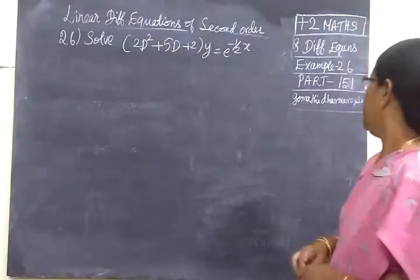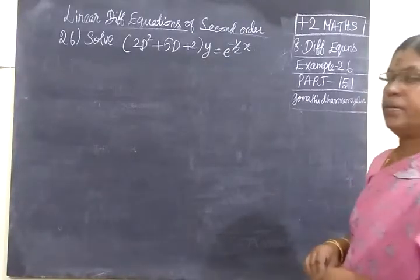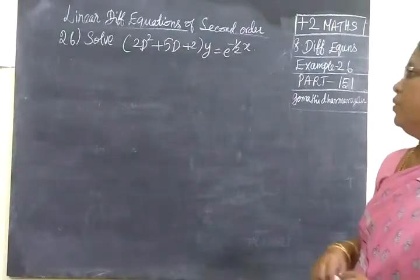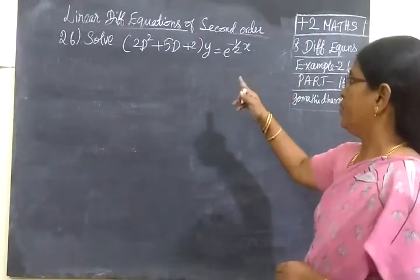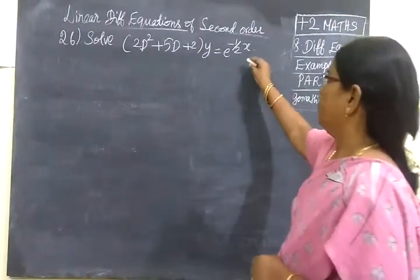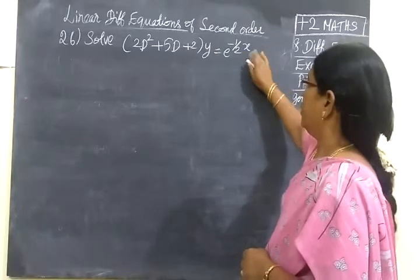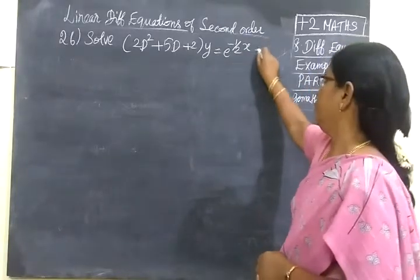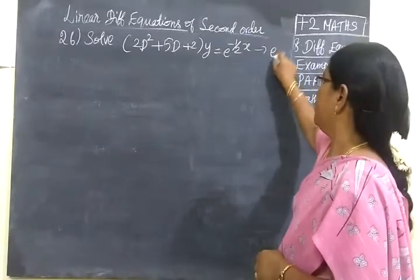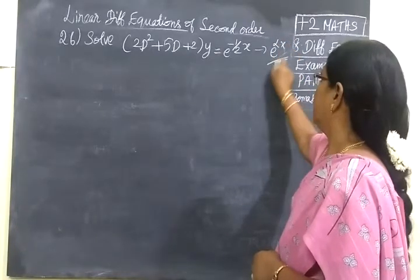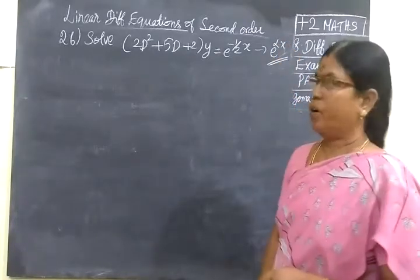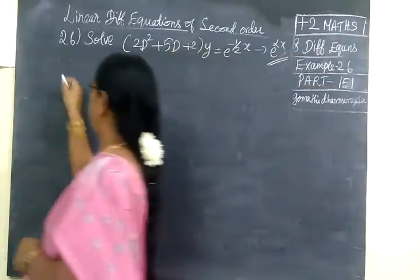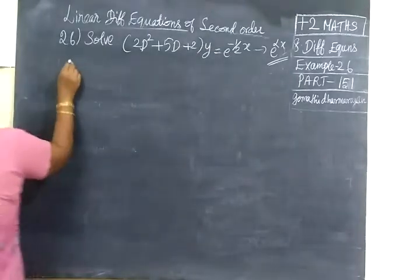We are solving problem 826, part 151 — solve this equation where the right-hand side is e^(αs). The right-hand side is given in the form e^(αs). For that, first we are finding the characteristic equation.